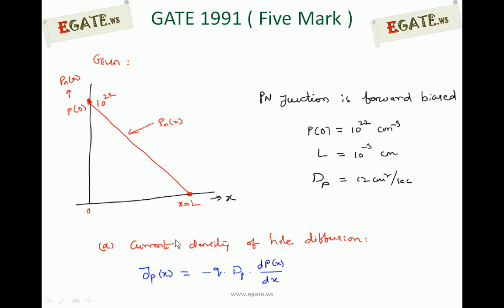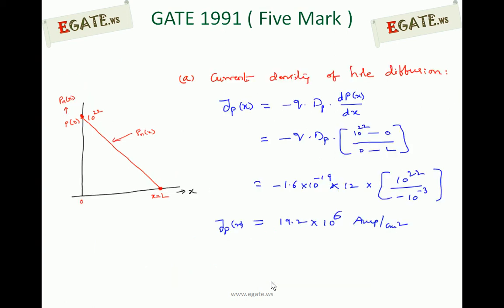Now the current density due to hole diffusion. The equation for that is JP(X) equal to minus Q into DP into dP(X)/dX, where Q is the charge of an electron, DP is the diffusion constant for holes, and dP(X)/dX is the net diffusion of holes moving over the X distance.